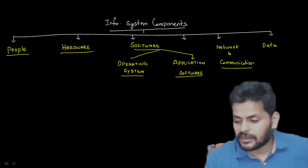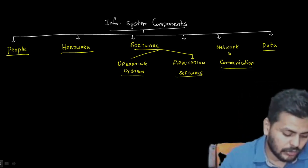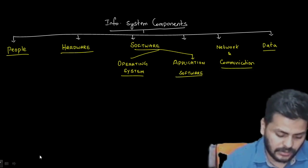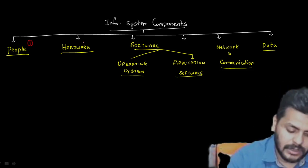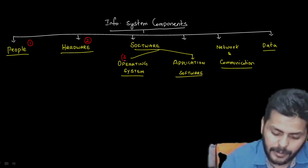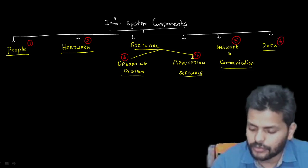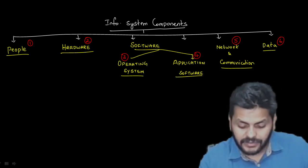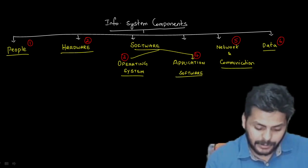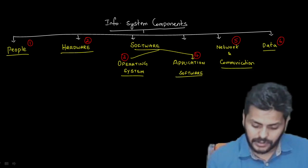The six numbered components are: (1) People, (2) Hardware, (3) Operating System / System Software, (4) Application Software, (5) Network and Communication, (6) Data. Let's start with the first and simplest one — people. People are those who are involved in the use of information systems.